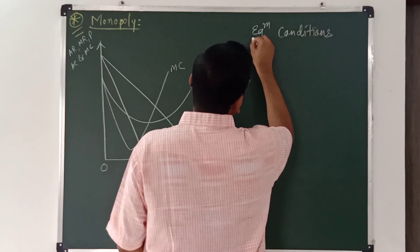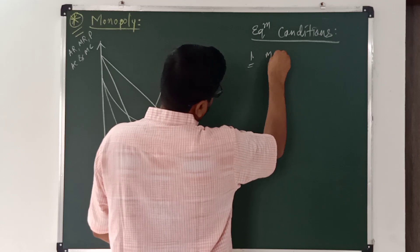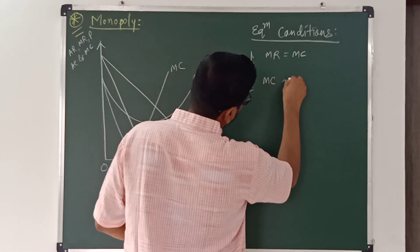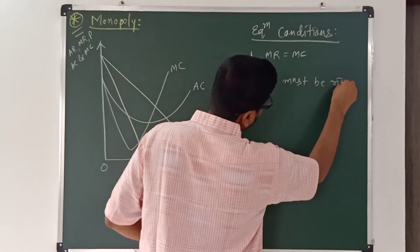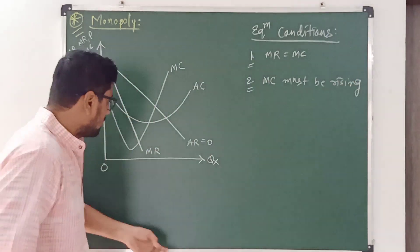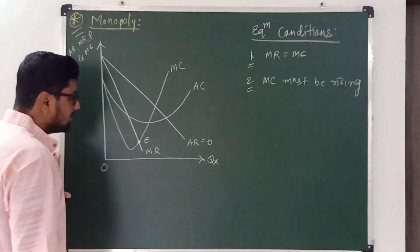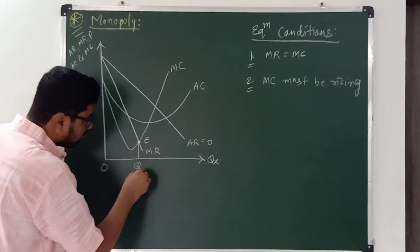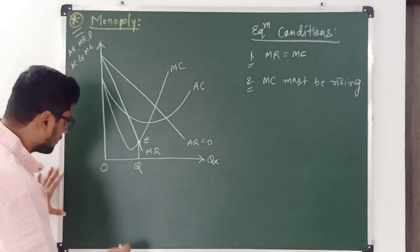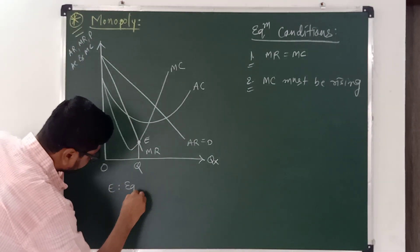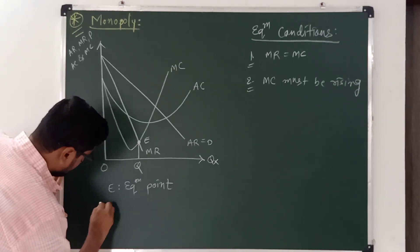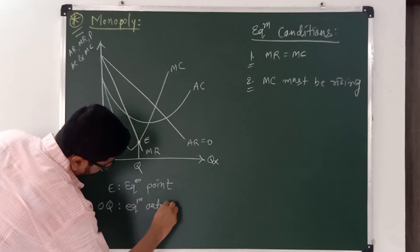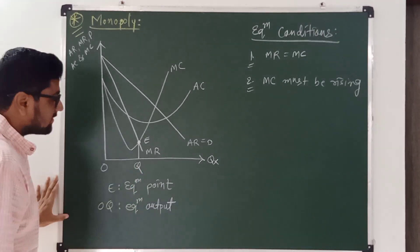The equilibrium conditions are: first, MR is equal to MC, and second, MC must be rising. At point E, MR and MC are equal and MC is rising, so E is the equilibrium point and OQ is the equilibrium output.